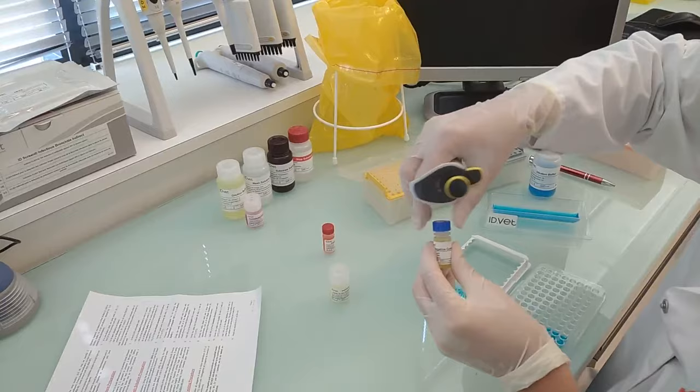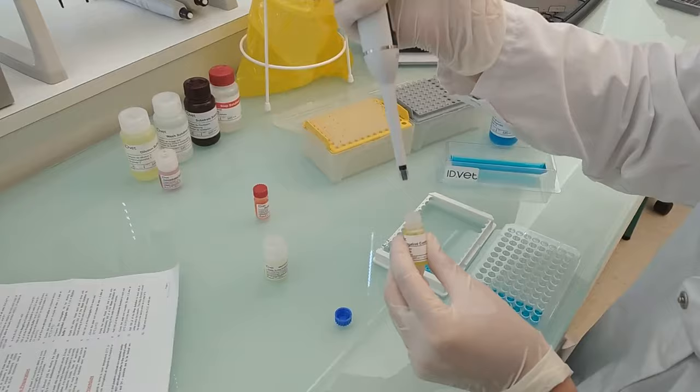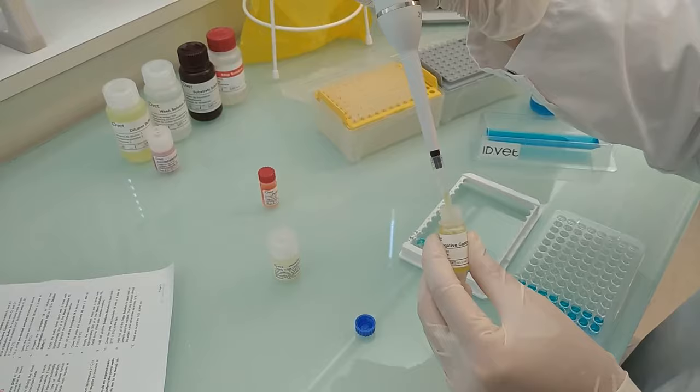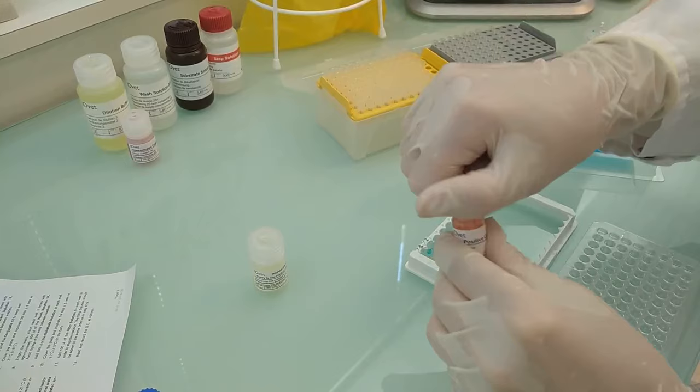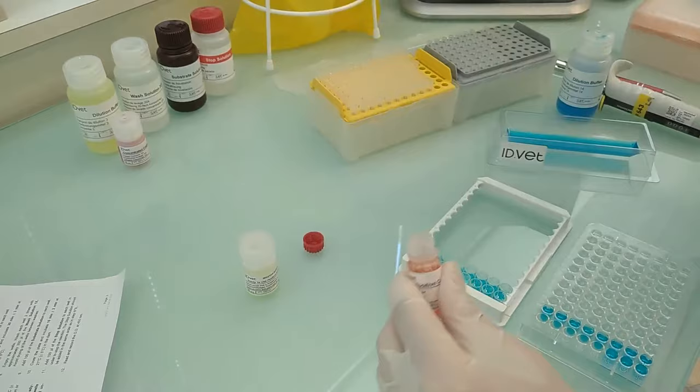You will now add the controls: 100 microliters of the negative control to wells A1 and B1, and 100 microliters of the positive control to wells C1 and D1.